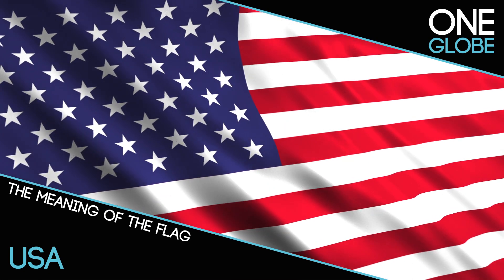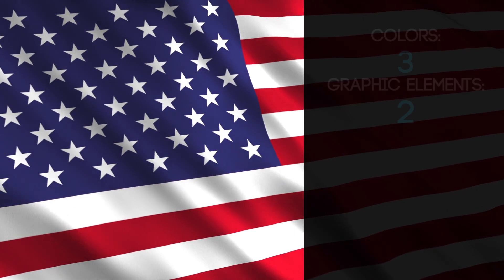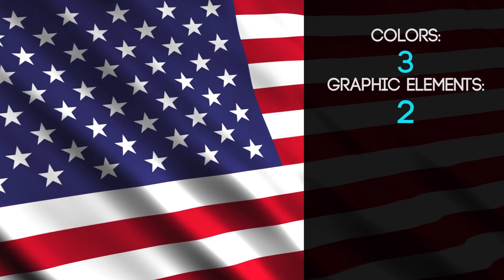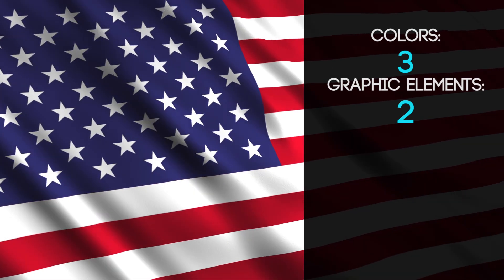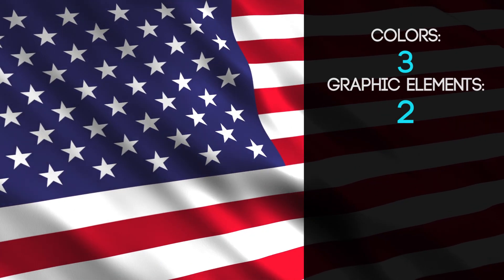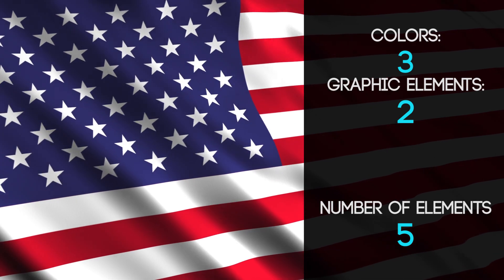The flag of the United States of America consists of three different colors and two graphic elements. This gives the flag a total of five different symbolic features.